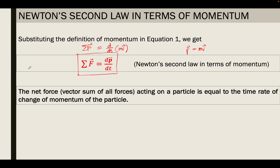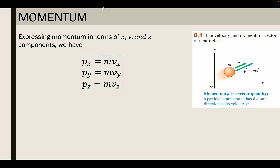Newton's second law in terms of momentum states that the net force, or the vector sum of all forces acting on a particle, is equal to the time rate of change — d over dt — of momentum of the particle, so that's why we have dP over dt. Since momentum P is a vector quantity, which is mass times velocity, we can express momentum in terms of x, y, and z components.